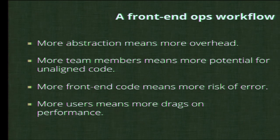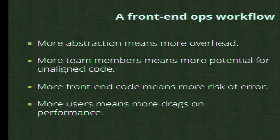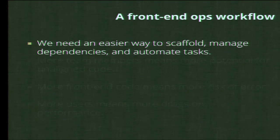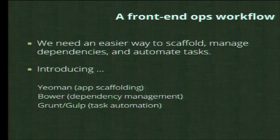More code means more risk of error. If you have a 30-kilobyte JavaScript file, chances are you'll introduce some bugs, especially in a large team. More users means more drag on performance. So we need an easier way to accomplish all of these tasks, and we can do that with tools currently in wide use in the web development community: Yeoman for app scaffolding, Bower for dependency management, and Grunt or Gulp for task automation.